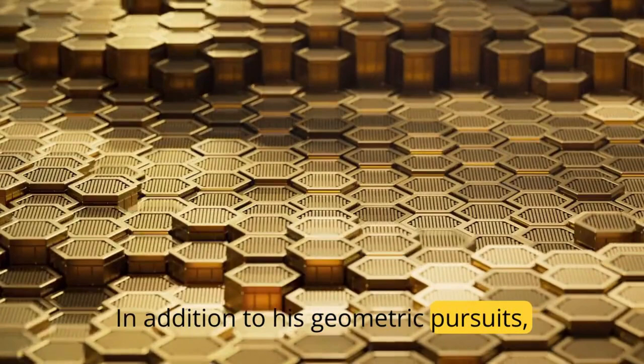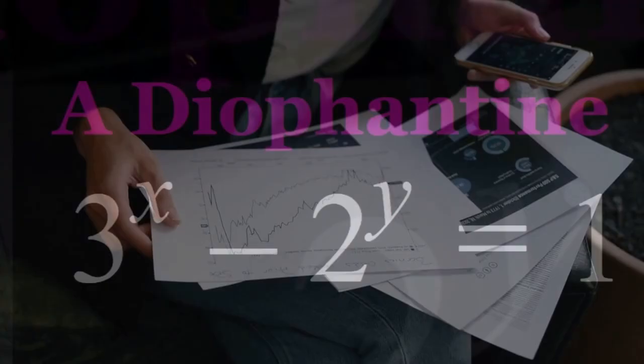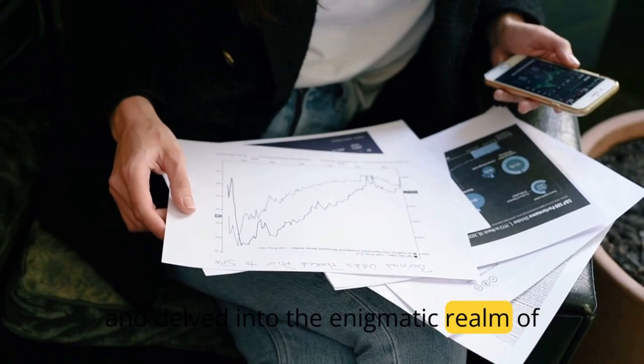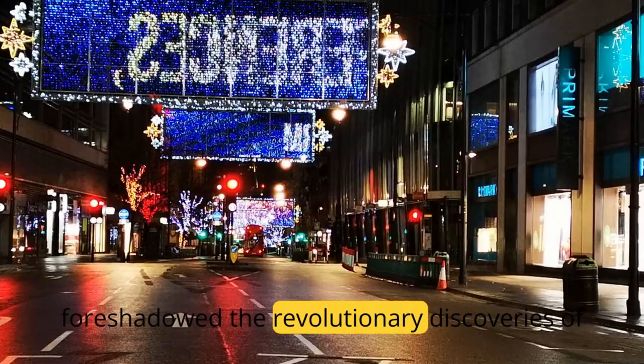In addition to his geometric pursuits, Lambert left an indelible mark on number theory and algebra. He devised innovative methodologies for tackling diophantine equations and delved into the enigmatic realm of irrational numbers, paving the way for future advancements. His elucidation of mathematical infinity and the concept of transcendental numbers foreshadowed the revolutionary discoveries of luminaries such as Georg Cantor and Karl Weierstrass.